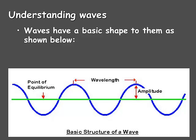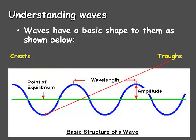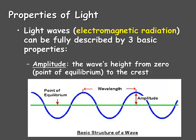Looking at the wave theory of light, waves have a basic shape, as shown in this diagram. We can see crests — the upward-pointing parts of the wave — three of them are shown. We also can see troughs, which are the downward parts of the wave, and there are three troughs shown. Light waves, also known as electromagnetic radiation, can be fully described by three basic properties. The first is amplitude — the wave's height from zero, meaning from the point of equilibrium to the crest. That point of equilibrium is the middle green line in this diagram, and the amplitude spans from that green line up to the highest part of a crest.